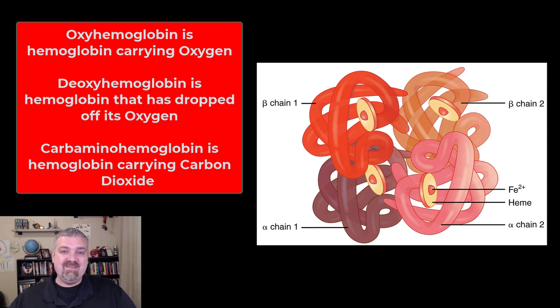So oxyhemoglobin is hemoglobin carrying oxygen. Deoxyhemoglobin is hemoglobin not carrying oxygen. And carbaminohemoglobin is hemoglobin carrying carbon dioxide back to the lungs where we can get rid of the CO2, pick up oxygen, and do it once again. We'll cover that more in the respiratory system.